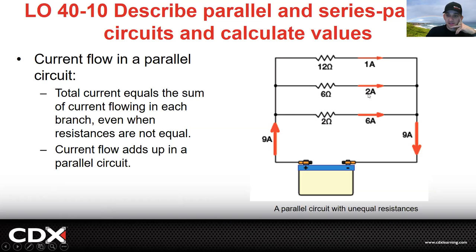So remember that total current equals the sum of current flowing in each branch added up. We got 6, 7, 8, 9. They're all added back up to 9. Current flow adds up in a parallel circuit. That's the biggest thing to remember.